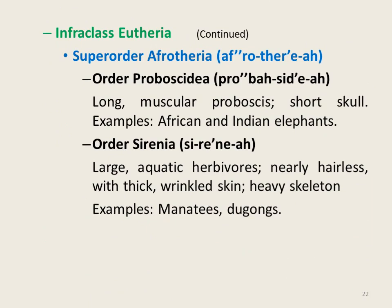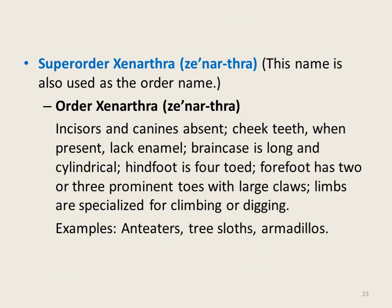Infraclass Eutheria is further classified into four superorders. The first superorder is Afrotheria, divided into two orders: order Proboscidea, which includes African and Indian elephants, and order Sirenia, which includes manatees and dugongs. The second superorder is Xenarthra, also used as the name of its order, which includes anteaters, tree sloths, and armadillos.